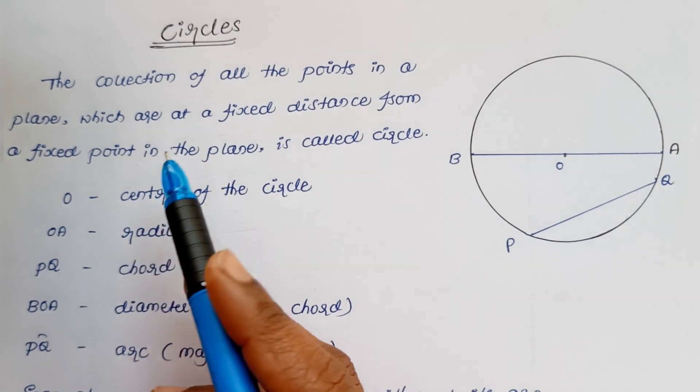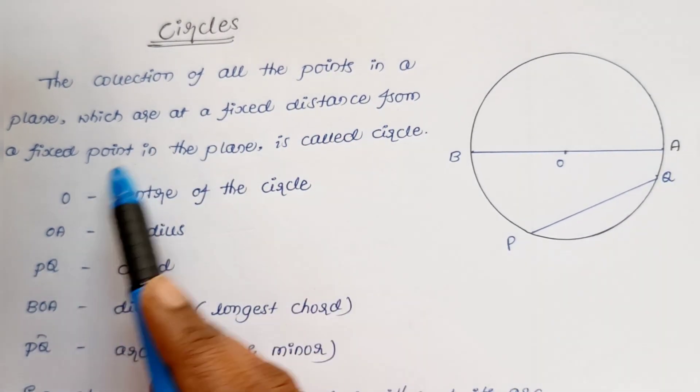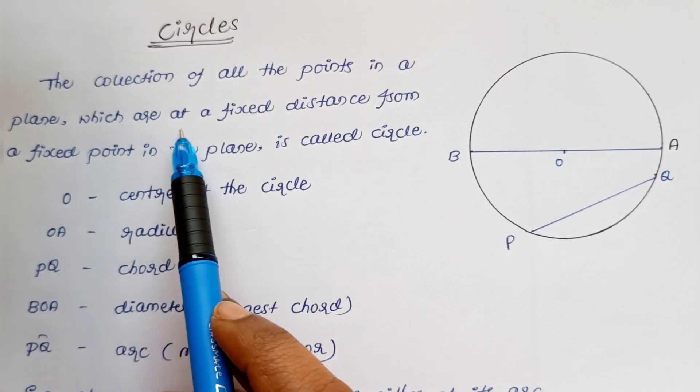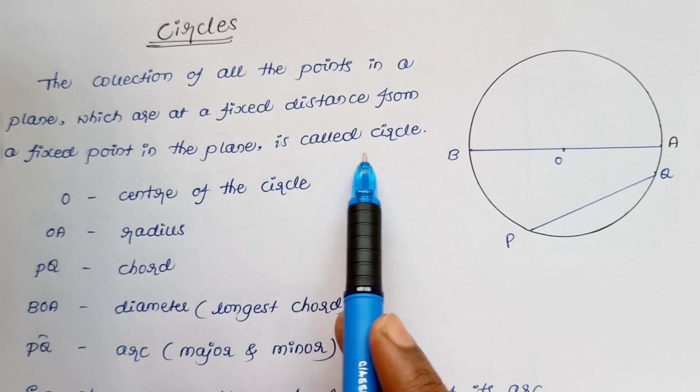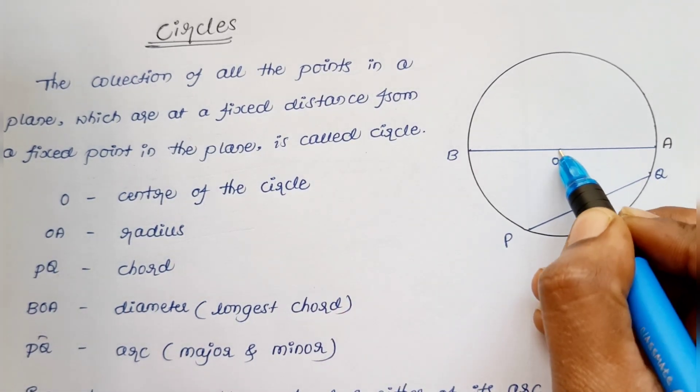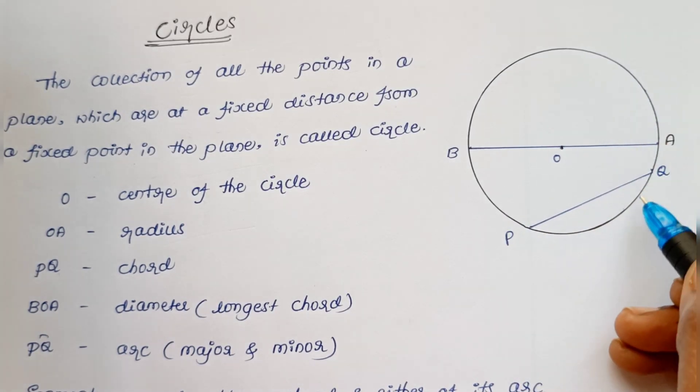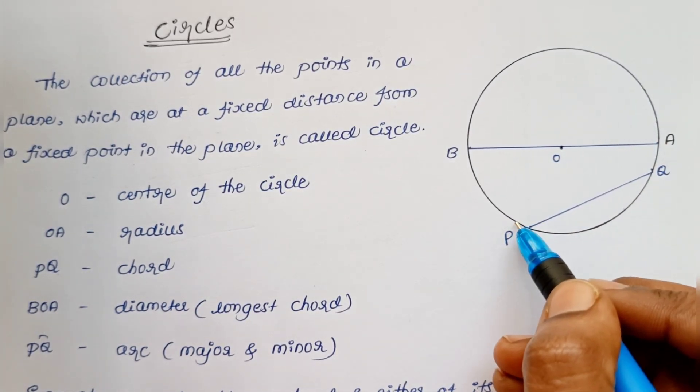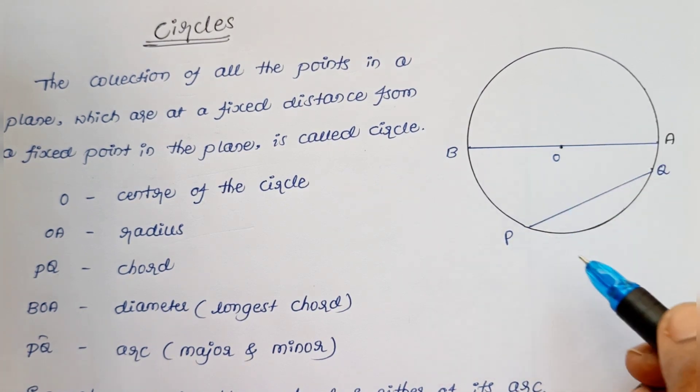What is a circle? A circle is the collection of all the points in a plane which are at a fixed distance from a fixed point in the plane. This is the fixed point and these are the collection of points which are equidistant from this point. So this is called a circle.